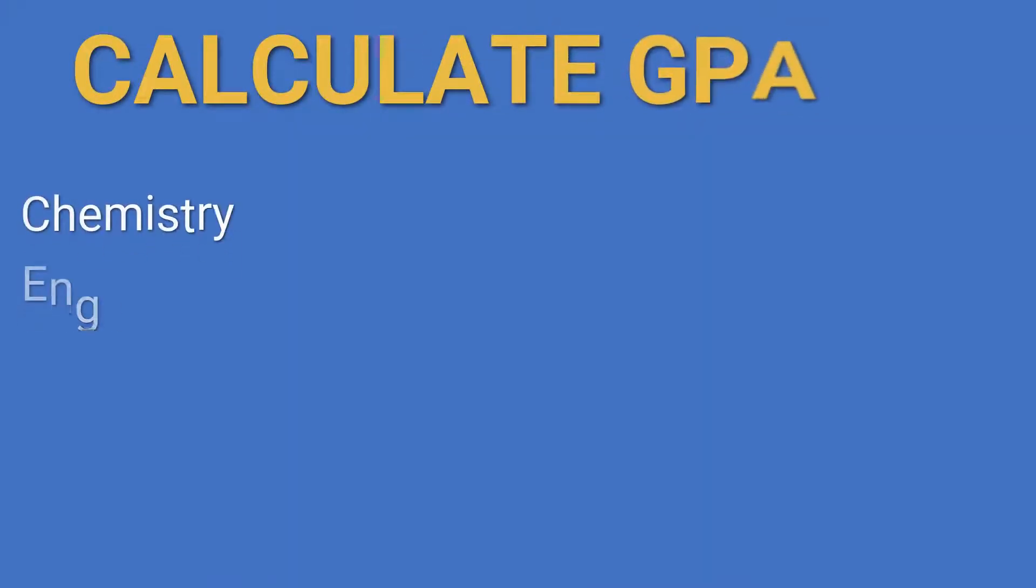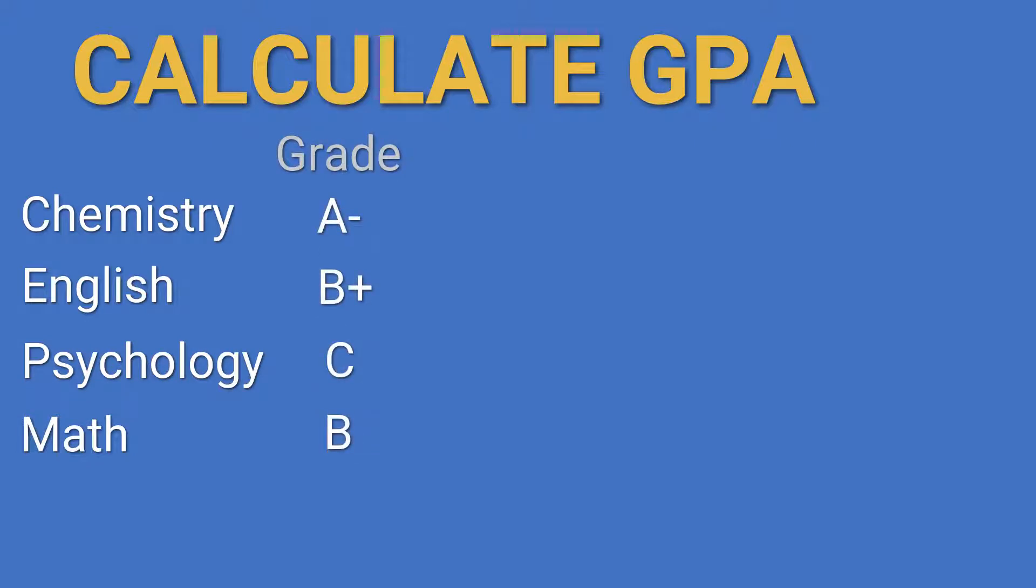Let's say you took Chemistry, English, Psychology, and Math, and these are the grades that you got. Each letter grade represents a grade point. You want to check with your school for the scale that you should use.